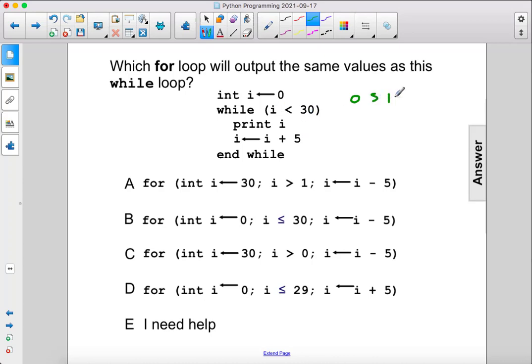So it's going to print 5, 10, 15, 20, 25, and then let's see, will it print 30? So i becomes 30, then 30 is not less than 30, so it's going to stop at 25.